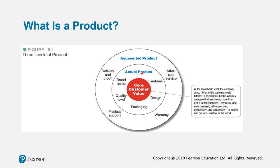Take a handphone as an example. The core customer value is communication — enabling people to connect with others. The actual product includes the brand name, quality level, packaging, design, and features. The augmented product, the third level, includes after-sales services, the warranty, support, and also delivery and credit terms.